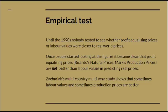But until the 1990s, nobody had actually bothered to see whether profit-equalising prices or labour values gave a better prediction of real-world prices. Once people started to do this, it became clear that profit-equalising prices are actually not any better than labour values in predicting real prices. David Zachariah has done a multi-year study looking at the relationship between market prices, labour values, and profit-equalising prices for all the OECD countries. He shows that sometimes labour values give a better prediction and sometimes production prices give a better prediction.